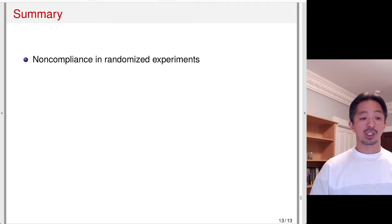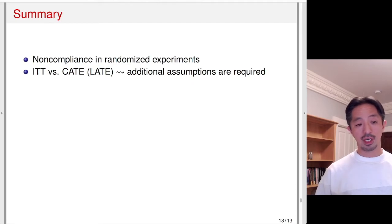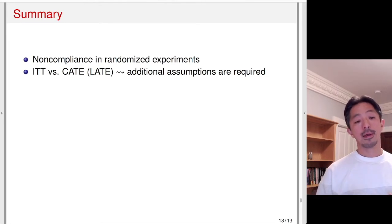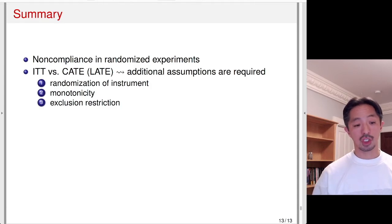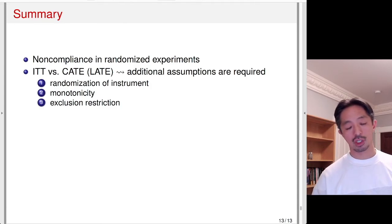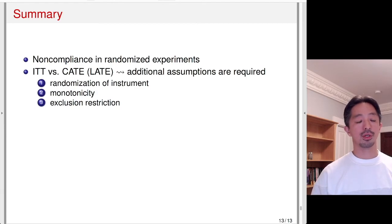To summarize the lecture: we discussed non-compliance in randomized experiments. There's an important difference between the intention-to-treat effect — easy to estimate by comparing encouraged and non-encouraged groups — versus the complier average treatment effect. To obtain the complier average treatment effect you need three additional assumptions: randomization of the instrument (satisfied in experiments), monotonicity (encouragement affects everyone in one direction, no defiers), and the exclusion restriction (encouragement affects the outcome only through the treatment).